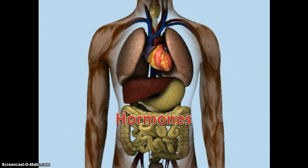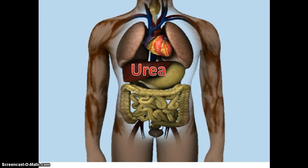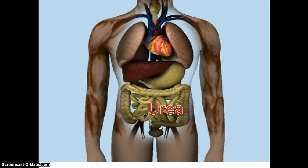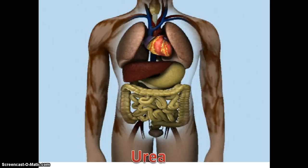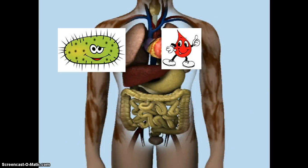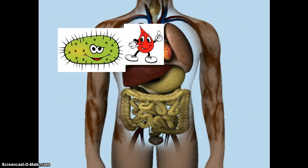Blood carries a waste product called urea from the liver to the kidneys for excretion into the urine. Blood protects the body from diseases, because white blood cells kill the bacteria and other germs which cause diseases.